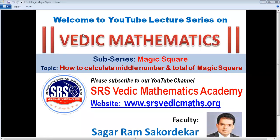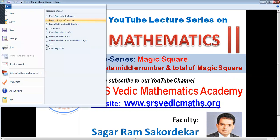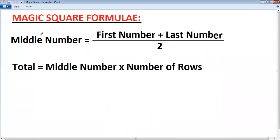Welcome to the YouTube lecture series on Vedic Mathematics, sub-series Magic Square. Today's topic: how to calculate the middle number and total of a magic square. The first formula is: middle number equals first number plus last number, divided by two. Once you know the middle number, use the second formula: total equals middle number multiplied by number of rows. Please learn how to draw 3×3, 5×5, and 7×7 magic squares before learning this topic.